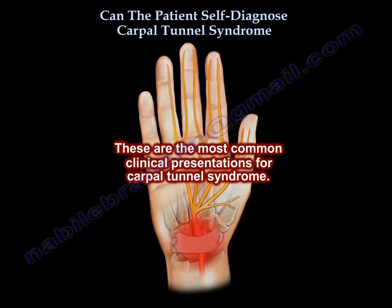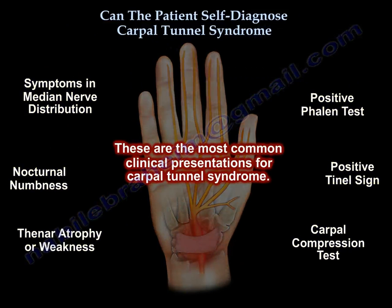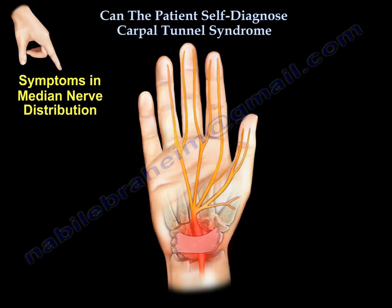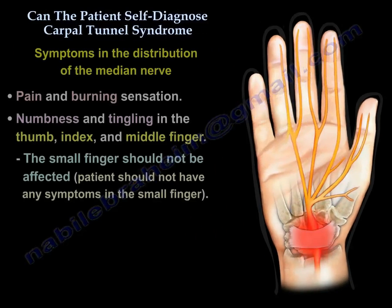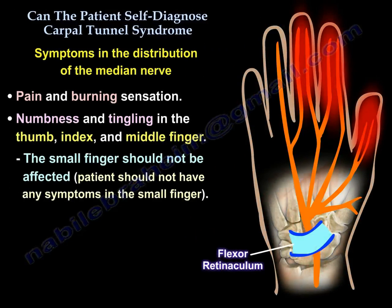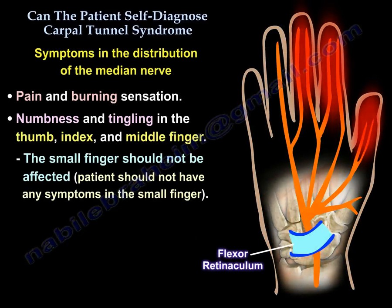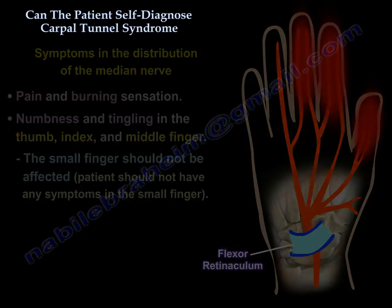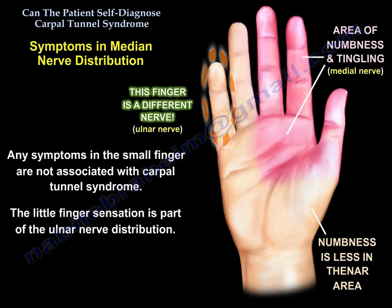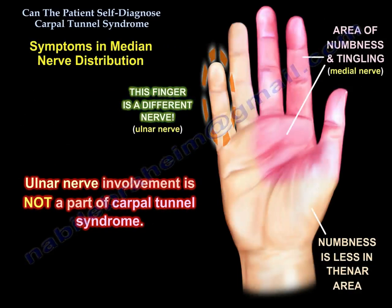These are the most common clinical presentations for Carpal Tunnel Syndrome. Symptoms occur in the distribution of the median nerve — pain and burning sensation, numbness and tingling in the thumb, index, and middle finger. The small finger should not be affected. Any symptoms in the small finger are not associated with Carpal Tunnel Syndrome, as the little finger's sensation is part of the ulnar nerve distribution.